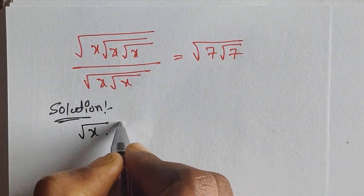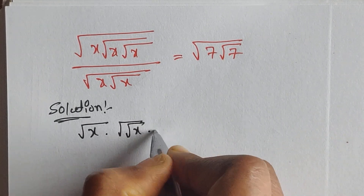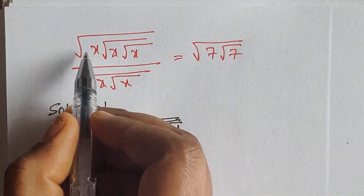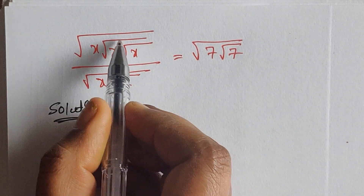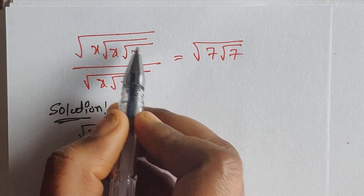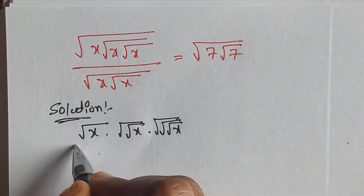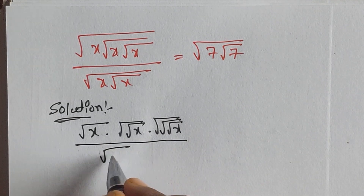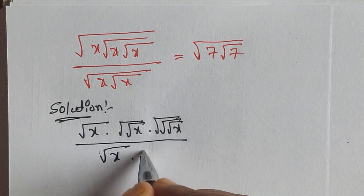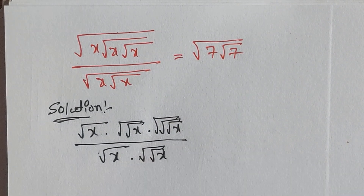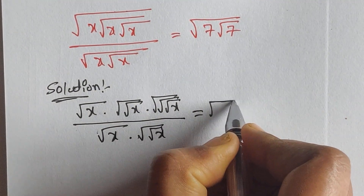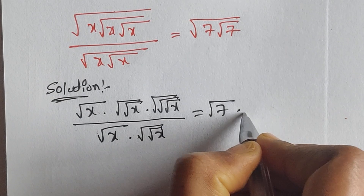We can write this as: square root of x, times square root of square root of x, times square root of square root of x. Because the first one has one square root, the second one has two square roots, and the third one has three square roots. Divided by square root of x times square root of square root of x.